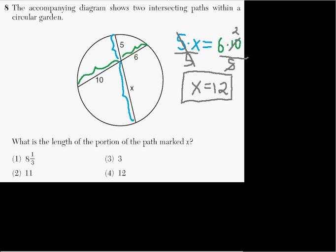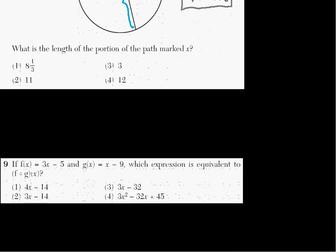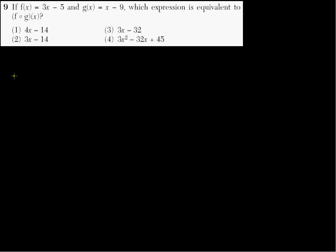Maybe in another video I will do a small proof of that. Problem number nine says if f of X is 3x minus 15 and g of X equals x minus 9, which expression is equivalent to f of g of X? This is just a bit of notation — f with that circle, f of g of X, is the same as writing the function f with a big parentheses with g of X inside of it.